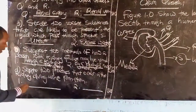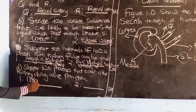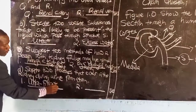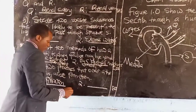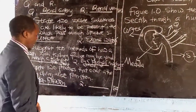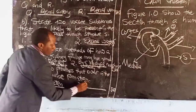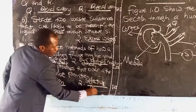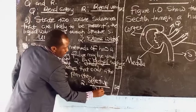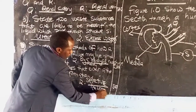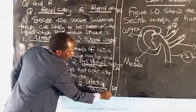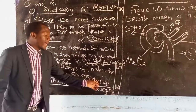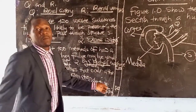So the two processes in urine formation are: ultra-filtration and selective reabsorption.